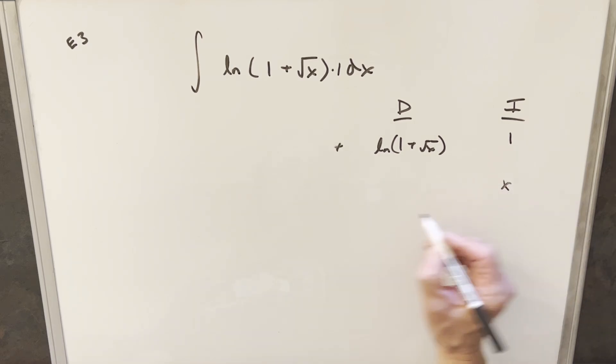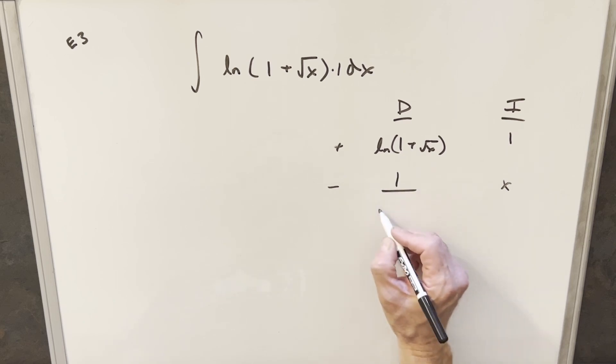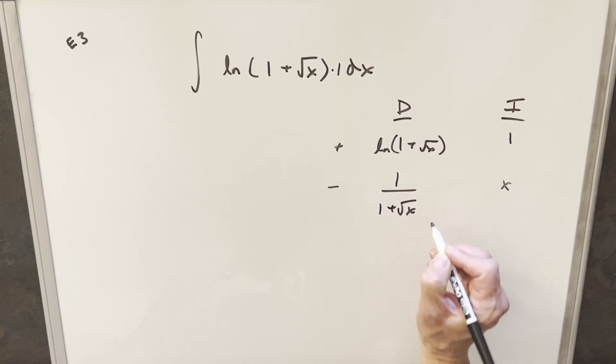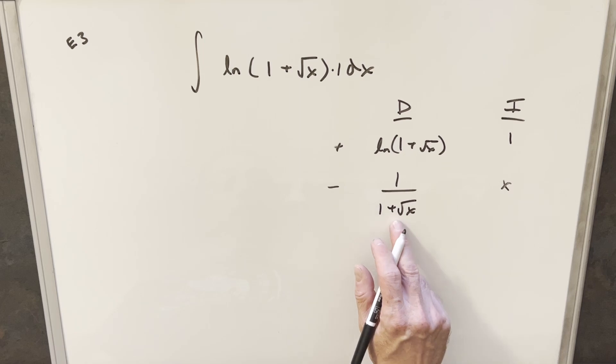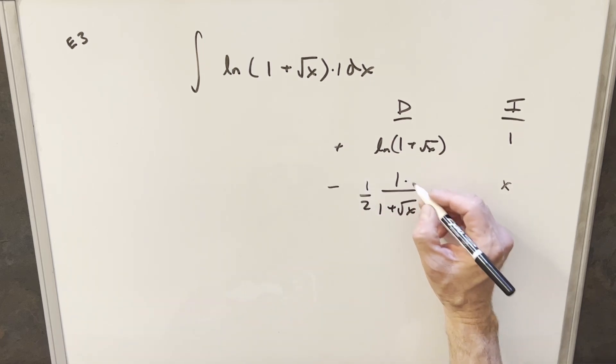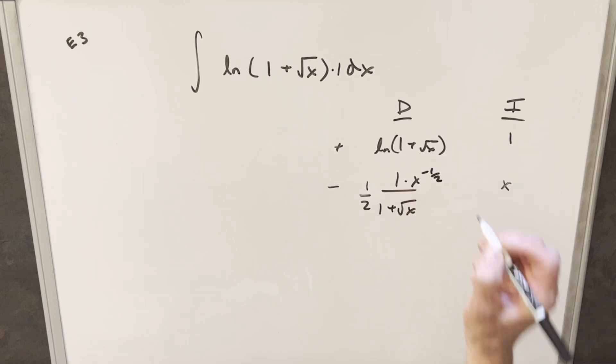So integrating one, I'm just going to get x over here and then differentiating, this is a little bit tricky. So we're going to have one over one plus square root of x. Then we need the chain rule. When we differentiate this, we're going to get one half and then in the numerator, we're going to have an x to the minus one half here.